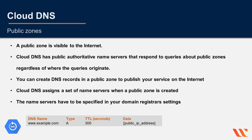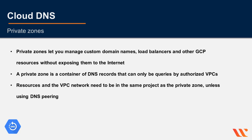Private zones enable you to manage custom domain names for your virtual machines, load balancers, and other GCP resources without exposing the underlying DNS data to the public internet. A private zone is a container of DNS records that can only be queried by one or more VPC networks that you authorize. The private zone can also be queried by resources in the same project where it is defined, and the VPC networks you authorize must be located in the same project as the private zone. You can override this with DNS peering.